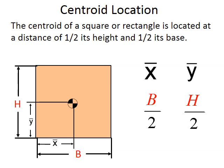To express this mathematically, which engineers often do, the x-coordinate, called x-bar, is B over 2. The y-coordinate, y-bar, is simply H over 2.